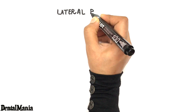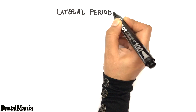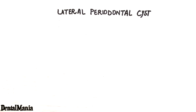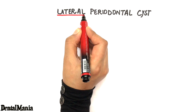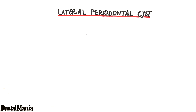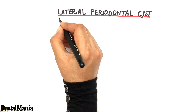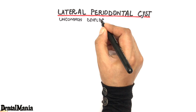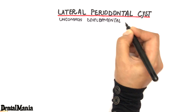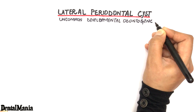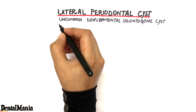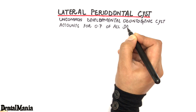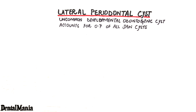Today's video is about lateral periodontal cyst. The lateral periodontal cyst is an uncommon developmental odontogenic cyst, accounting for only 0.7% of all jaw cysts.